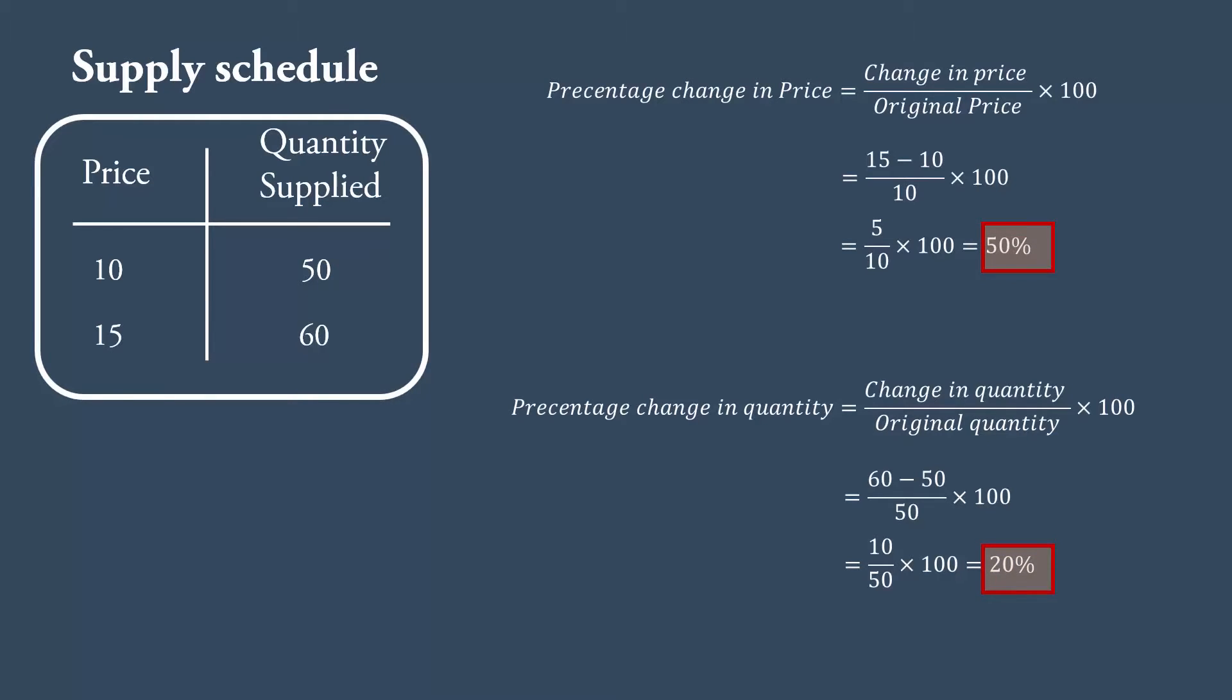Now compare. A large increase in price brings out a small expansion in supply. The correct decision is, a given percentage change in price, i.e., 50%, causes a less than proportionate increase in quantity supplied, i.e., 20%. This is the correct way of comparing the two changes.